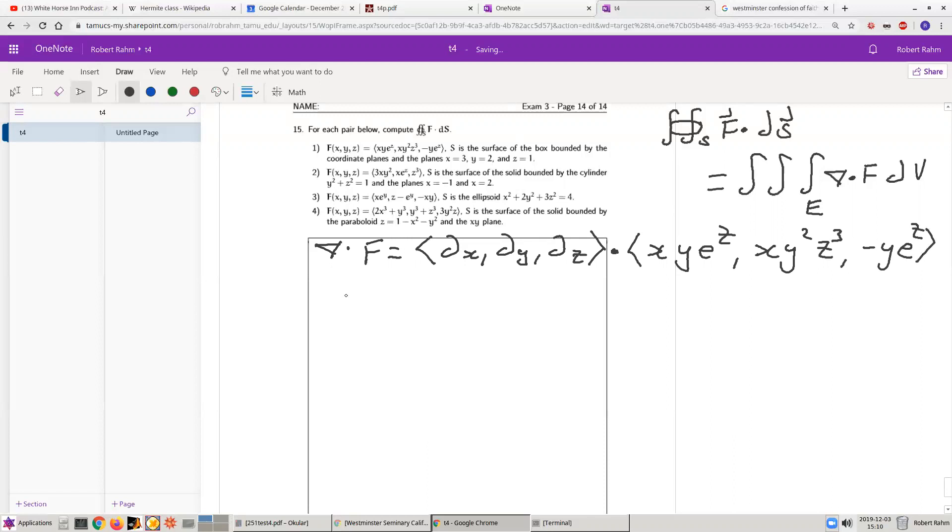Okay, and so this is going to be, so it's the partial derivative of this with respect to x, so that's y e to the z plus the partial derivative of that with respect to y, so this is plus 2xy z cubed, plus the partial derivative of this with respect to z, so this is minus y e to the z, and this is just 2xy z cubed.